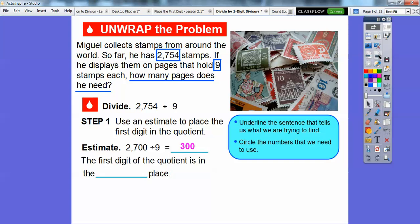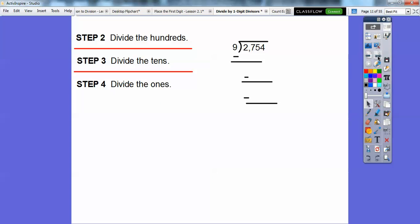The first digit in this quotient is in the hundreds place. That's a good piece of information to know, because our answer is going to be around 300, maybe a little bit more, maybe a little bit less. Actually, it's going to be a little bit more because our number is a little bit more than 2,700.